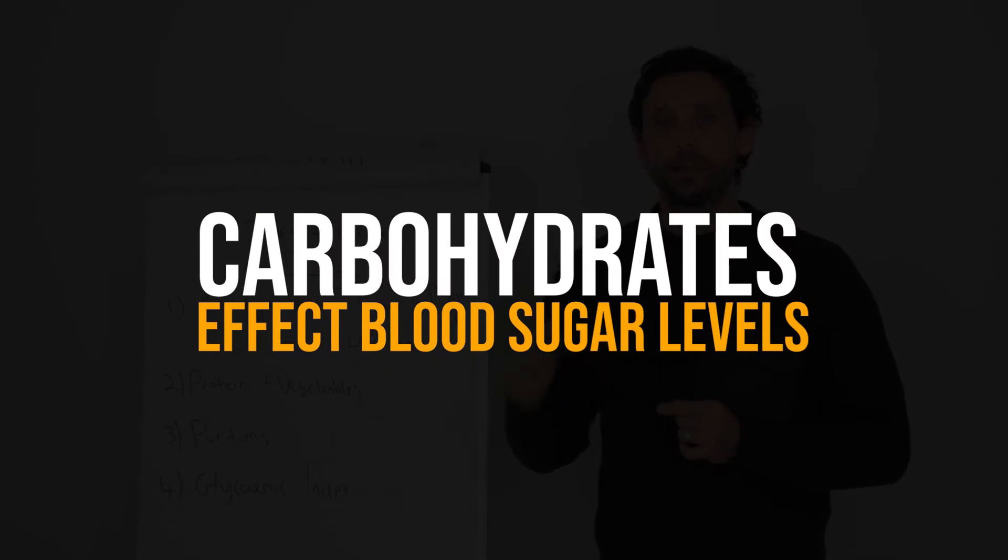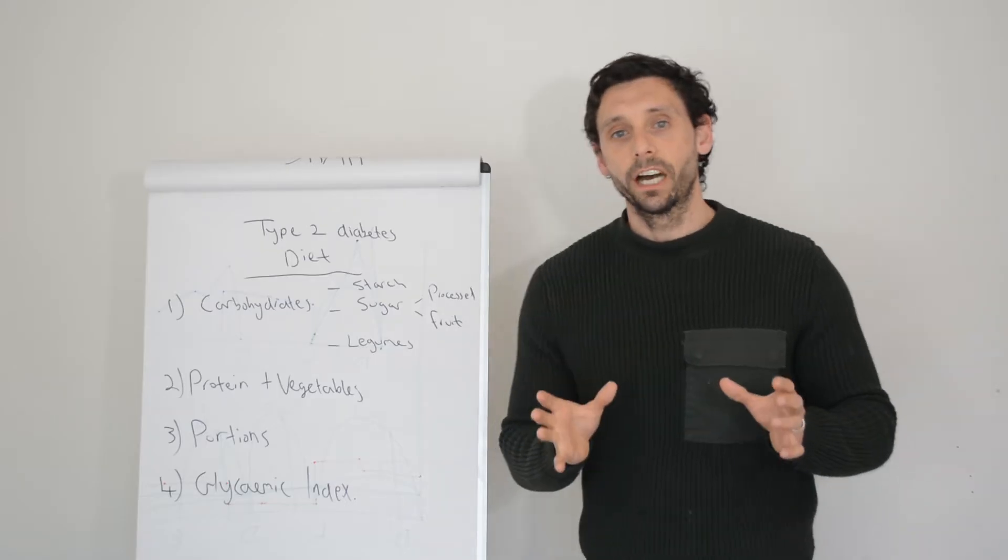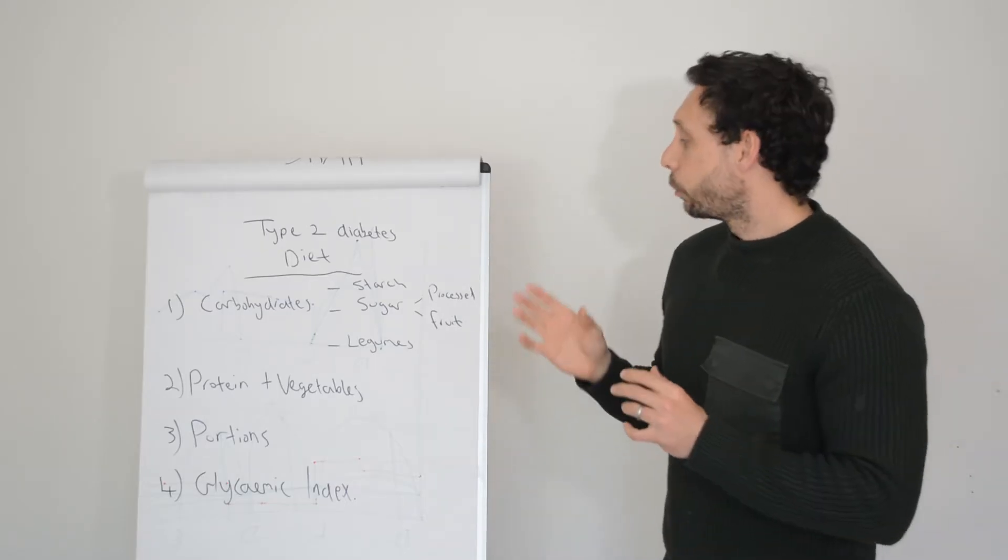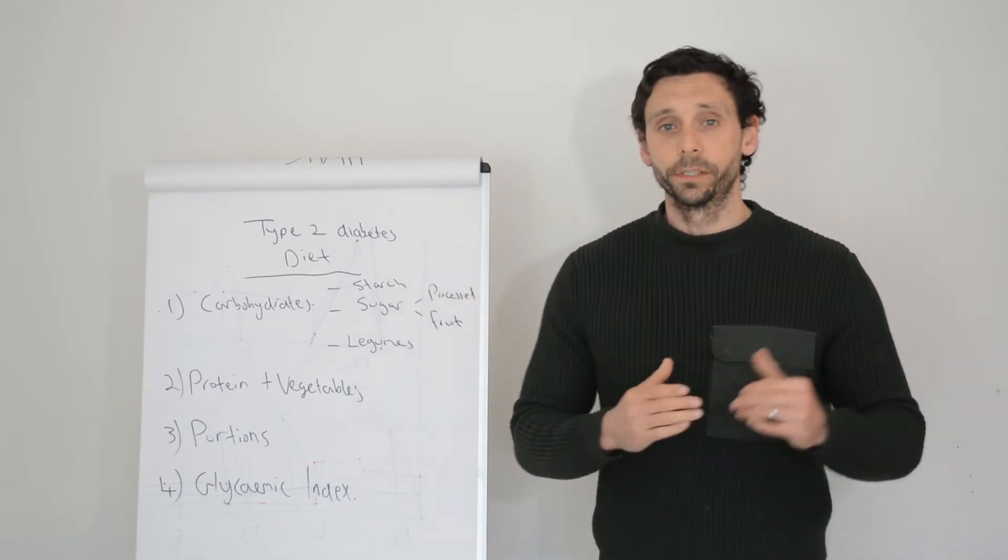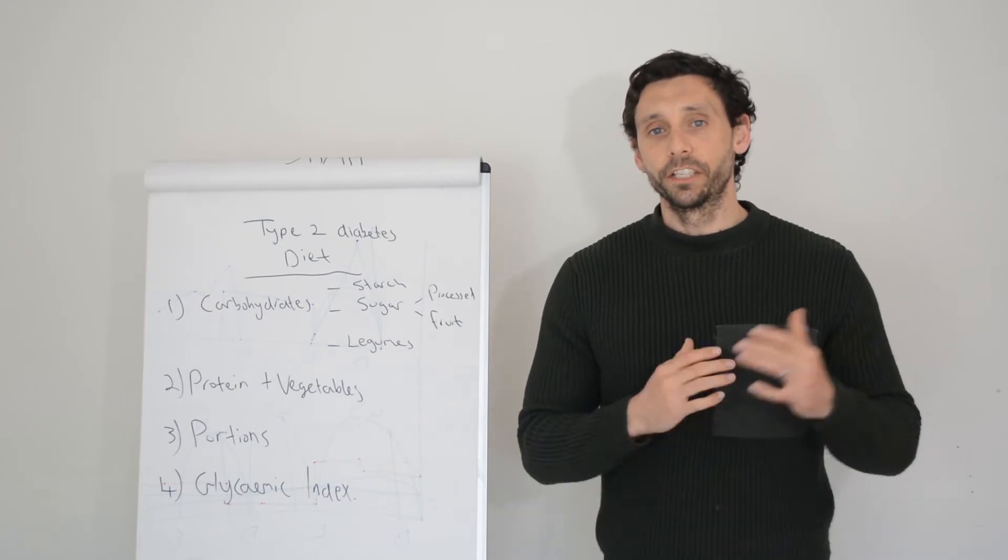Number one: carbohydrates affect blood sugar levels. If you don't know where carbohydrates are in your diet, we find them in lots of different places. The reason we're interested in carbohydrates is because it is the carbohydrates that affect your blood glucose levels.